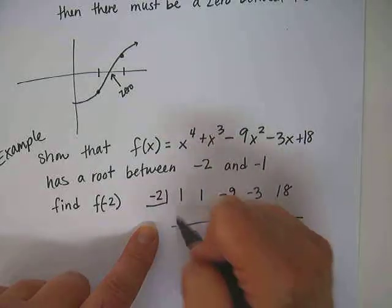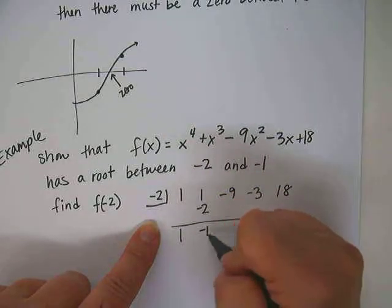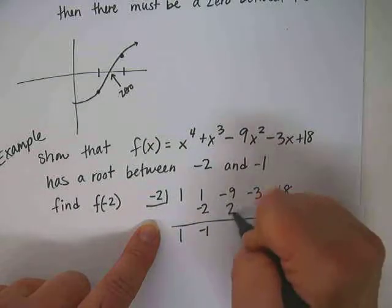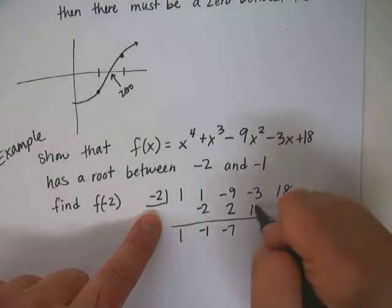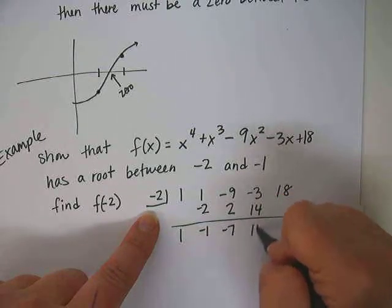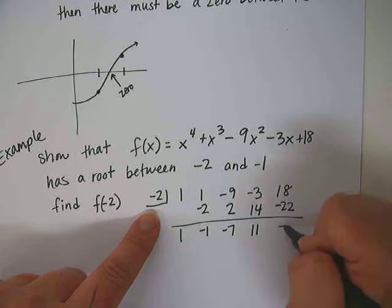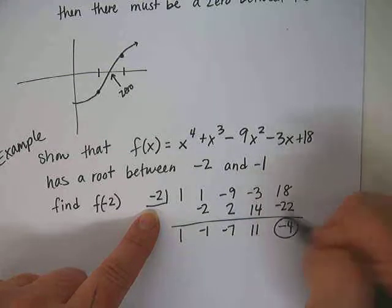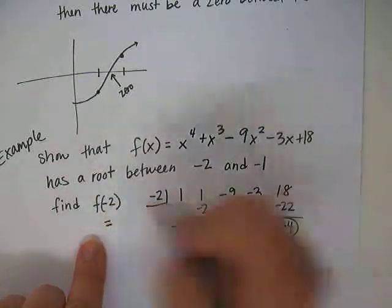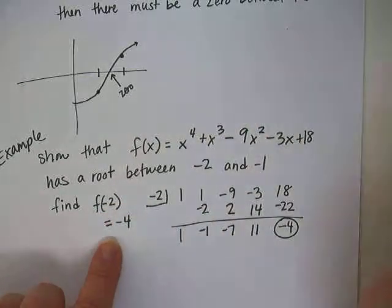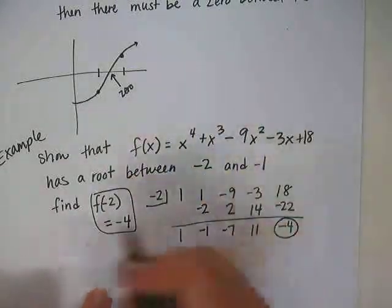So 1, 1, negative 9, negative 3, 18. Bring down the 1, 1 times negative 2 is negative 2, 1 plus negative 2 is negative 1, negative 1 times negative 2 is 2, negative 9 plus 2 is negative 7, negative 7 times negative 2 is 14, negative 3 plus 14 is 11, negative 2 times 11 is negative 22, which gives us an answer of negative 4. So f of negative 2, at the x value of negative 2, the y value is negative 4.